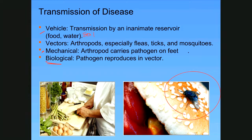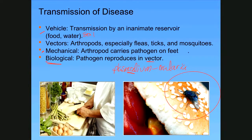Biological transmission is where the pathogen actually carries out part of its life cycle inside the vector itself. The best example is Plasmodium in mosquitoes — Plasmodium causes malaria. Without the Anopheles mosquito, the Plasmodium pathogen cannot survive. It can't be transmitted and can't survive because the mosquito is part of its life cycle. Sexual reproduction of the Plasmodium parasite takes place inside the mosquito.